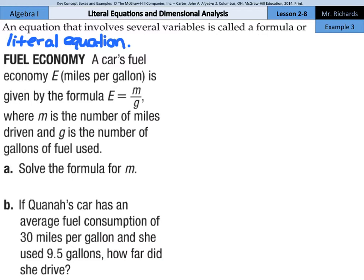So fuel economy. A car's fuel economy, E, which stands for miles per gallon, is given by the formula E equals M divided by G, where M is the number of miles given, and G is the number of gallons of fuel used. Part A: Solve the formula for M.